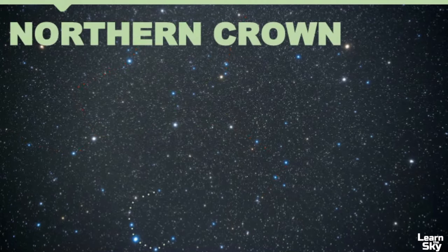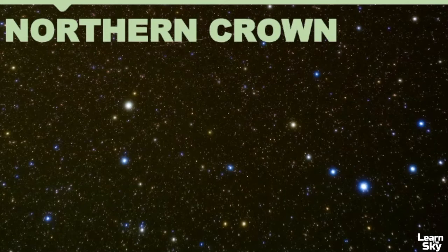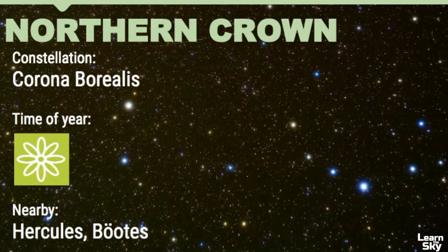We now move to the Northern Crown, which we've mentioned a few times — it's called Corona Borealis. It's this C-shaped pattern we can see in the sky, and the name itself means Corona Borealis: corona meaning crown, borealis meaning north. Here's another picture of the Northern Crown — can you see that C shape on its side? The constellations nearby are Hercules and Boötes. So if you can arc to Arcturus finding Boötes, Corona Borealis is right next door.